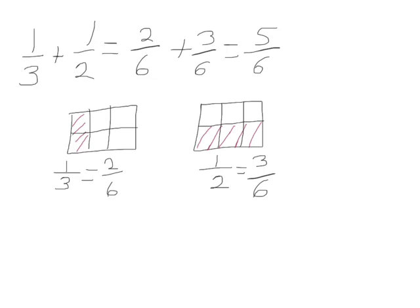We can count our sixths in our rectangles: one, two, three, four, five, six. When we get common units we might want to notice that our units get smaller. The pieces are smaller — I still have one-half shaded but when they're sixths it is a smaller unit.